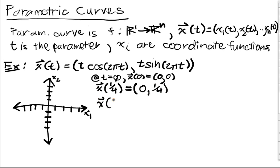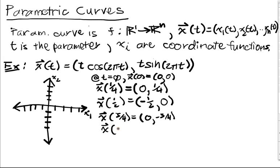x of 1/2 is going to be... I'm going to get -1/2 here. So I'll get -1 from the cosine of π that I'll get here, and then I'll multiply that by 1/2. And then I'll have 0 in the second coordinate. x of 3/4, similarly we compute and we're going to obtain (0, -3/4). And finally x of 1 is going to be equal to (1, 0).